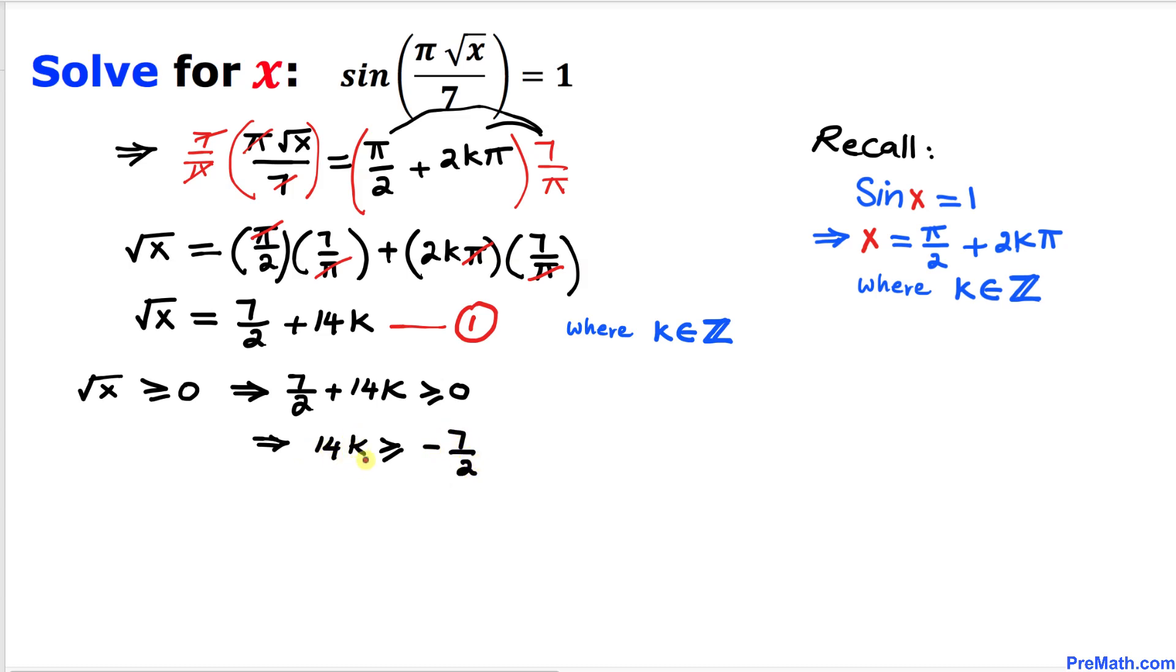To isolate k, multiply by 1 over 14 on both sides. We end up with k is greater than or equal to negative 1 over 4.